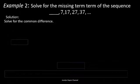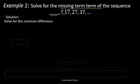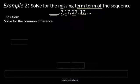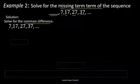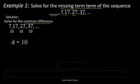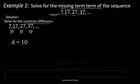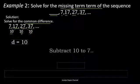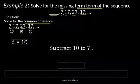Now let's consider the second example: solve for the missing term of the sequence — missing term, 7, 17, 27, 37. The missing term is the first term, so we need to determine it. We follow the same process and solve for the common difference. The common difference is positive 10: 17 minus 7 is 10, 27 minus 17 is also 10, and 37 minus 27 is also 10.